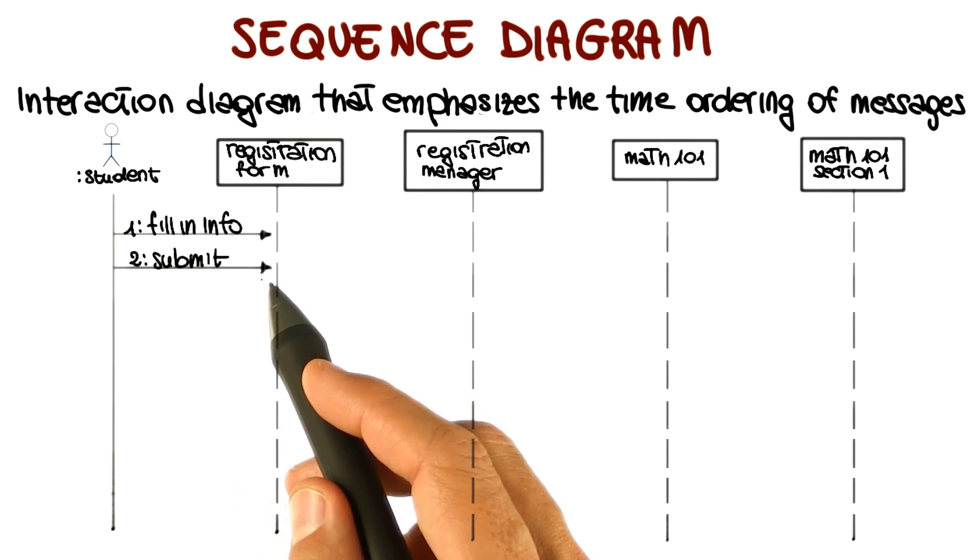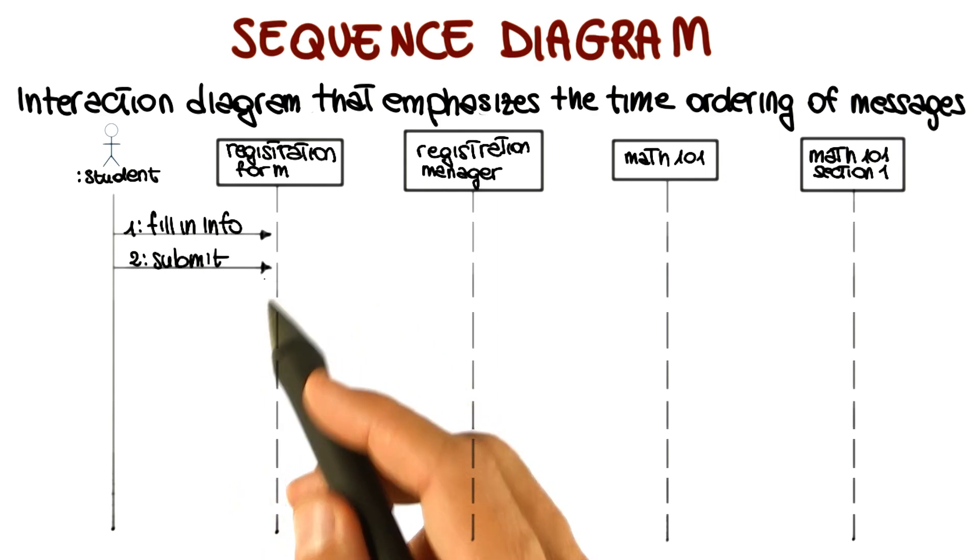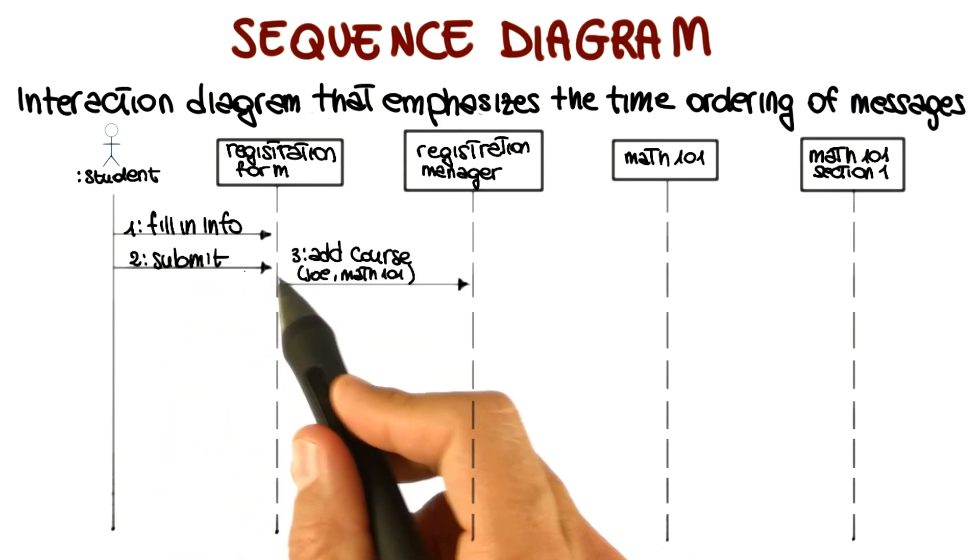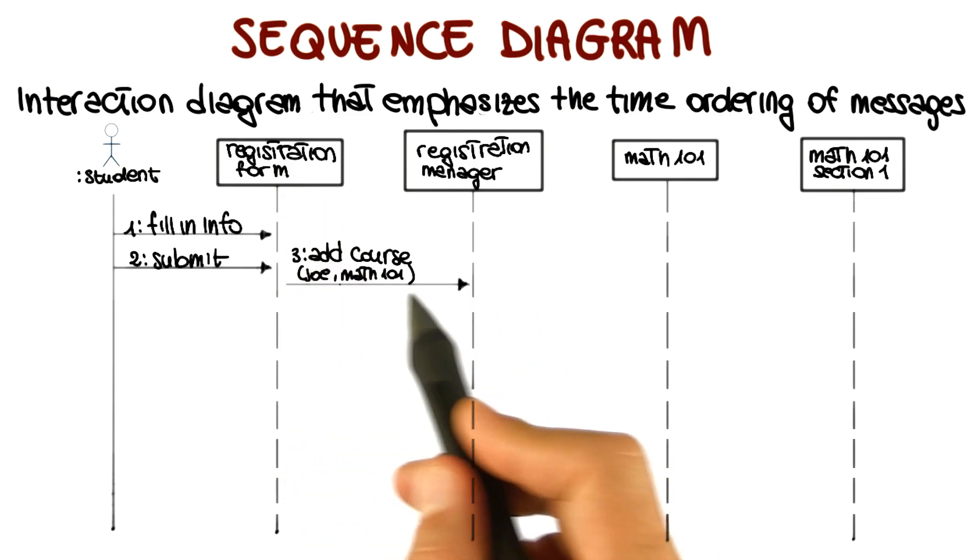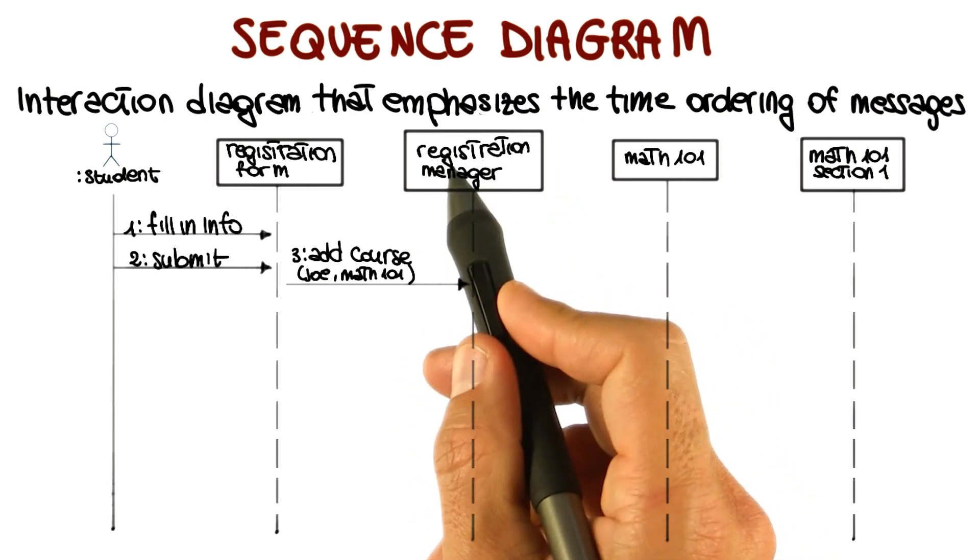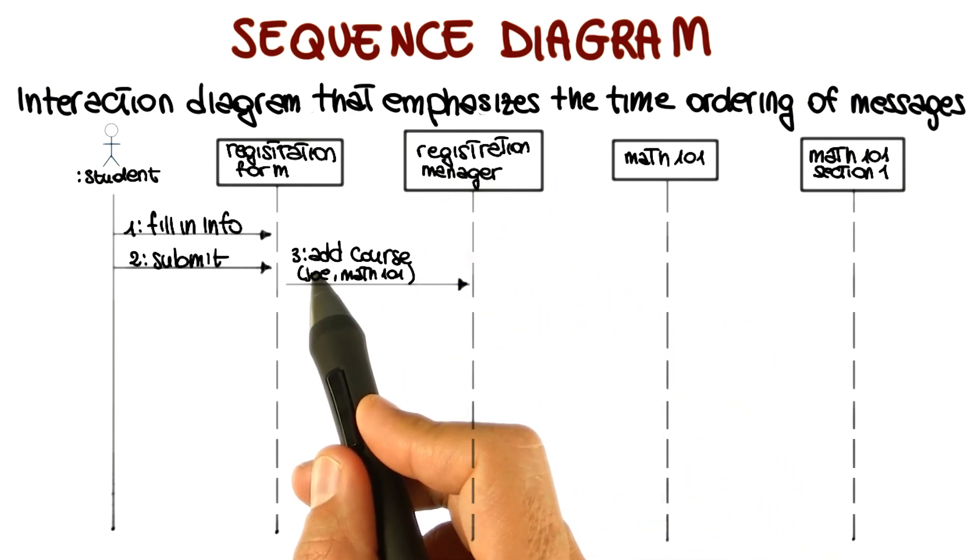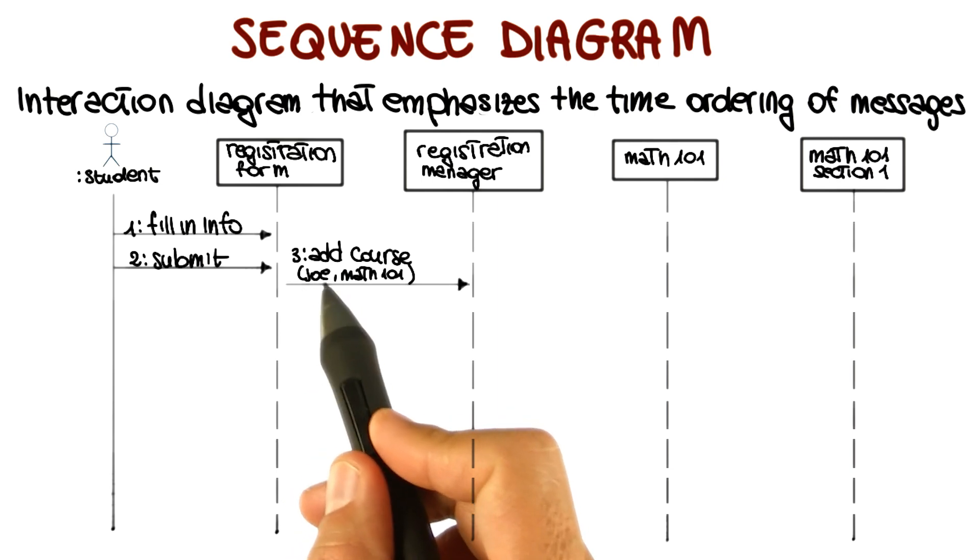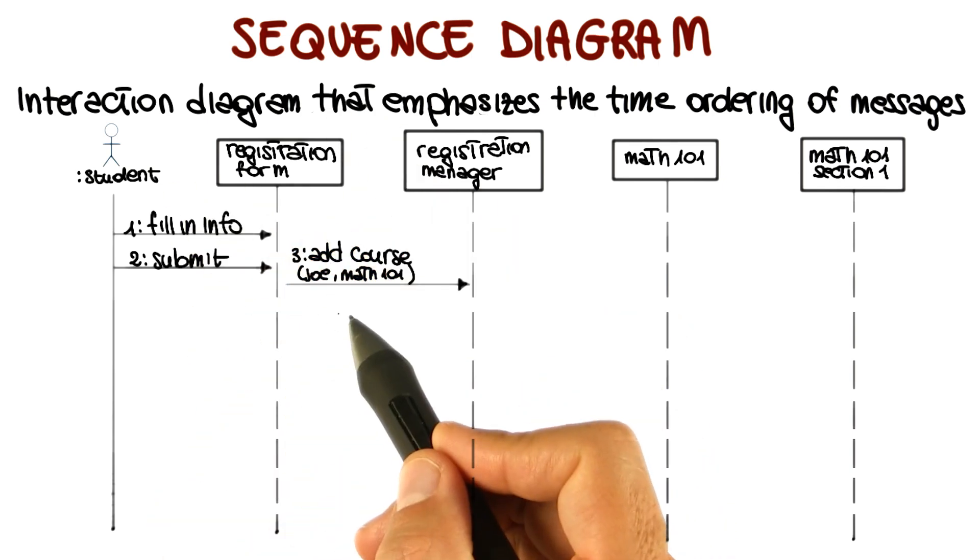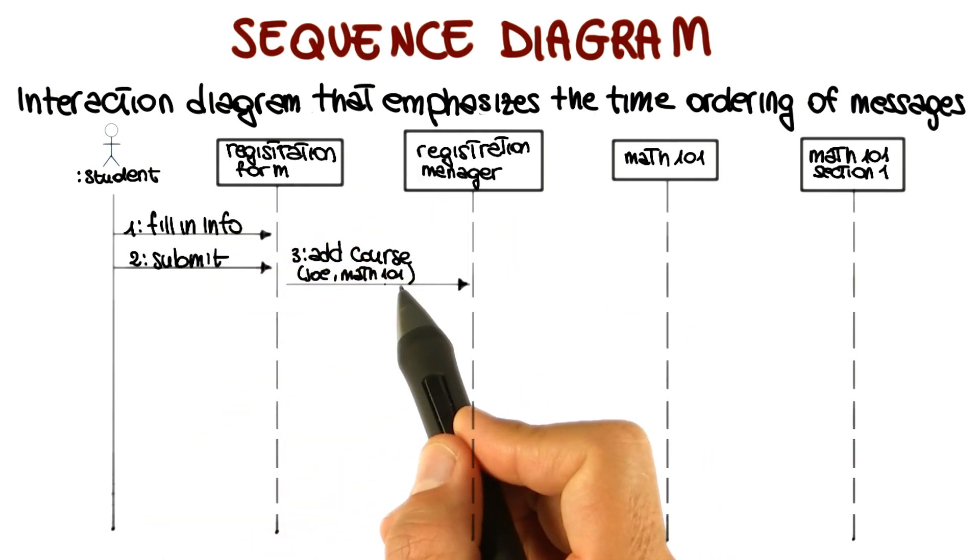Then the student might submit the form, which is also a message that goes to the registration form. At this point, when the submission takes place, the registration form will send the message to the registration manager. Specifically, it will invoke the add course functionality, and pass Joe, the name of the student, and Math 101, which is the specific course for which Joe is registering.